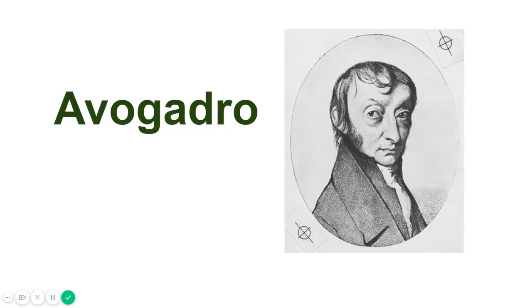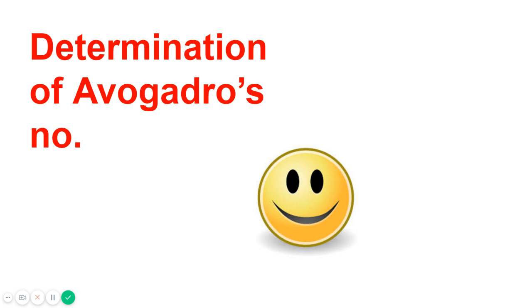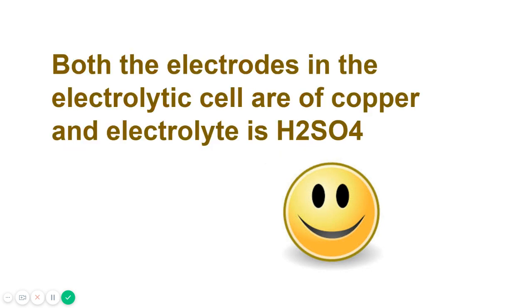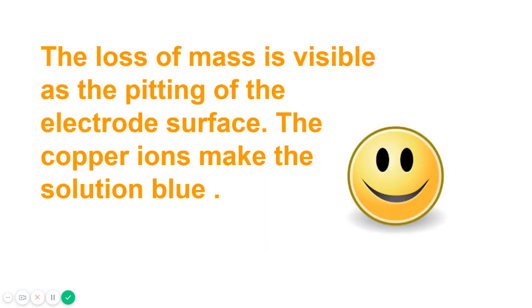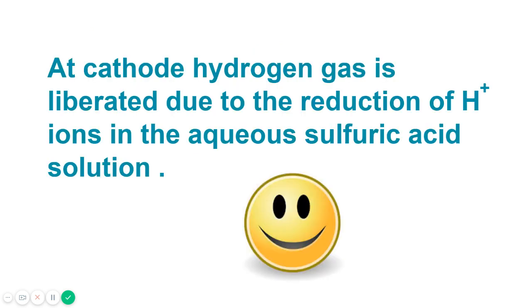The person on the screen is Avogadro, who is behind all this knowledge. Now let's see how Avogadro's number was determined. In the experiment, both electrodes in the electrolytic cell are made of copper and the electrolyte is sulfuric acid. The positive electrode (anode) loses mass as copper atoms are converted to copper ions — this loss of mass is visible as pitting of the electrode surface, and the copper ions make the solution blue.